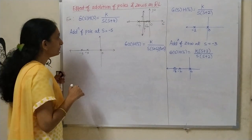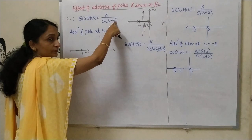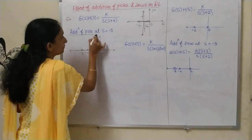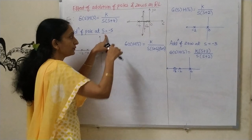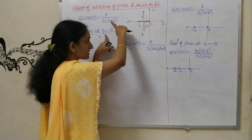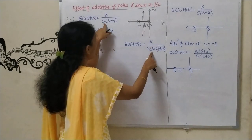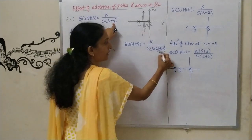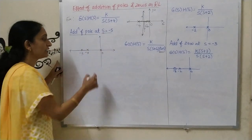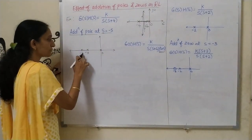Now next, I am adding a pole in this transfer function — addition of pole at s = −5. I have added one more pole at s = −5, so my new transfer function is K / (s(s+4)(s+5)). I have plotted poles at s = 0, −4, and −5.